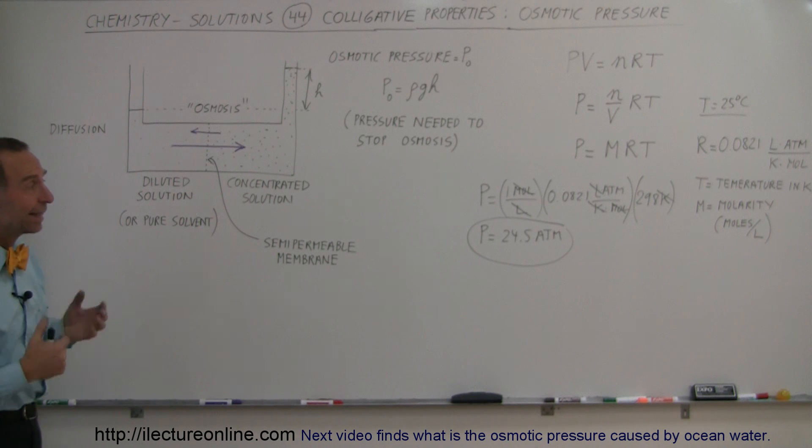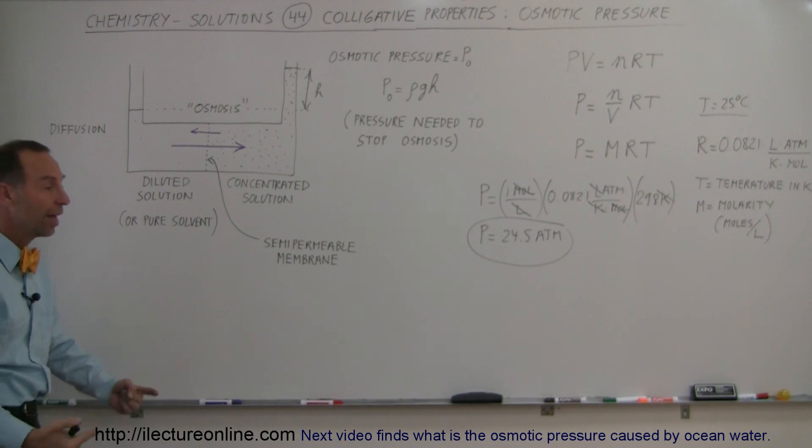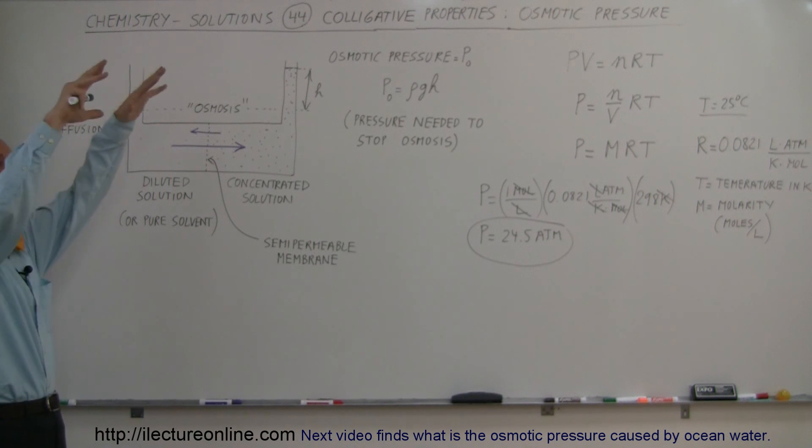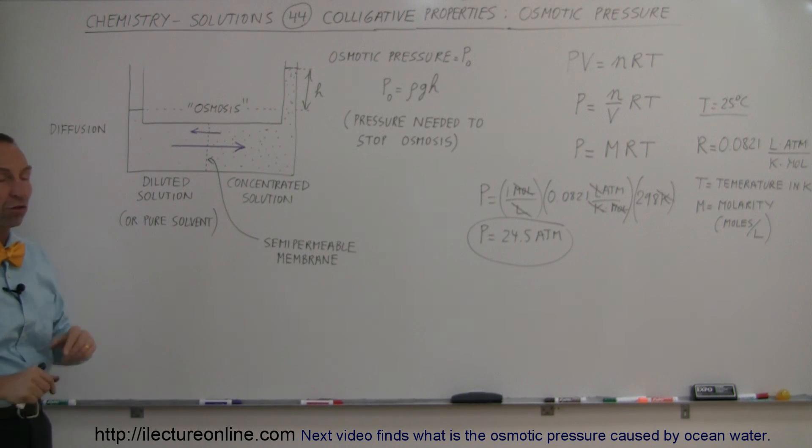That's absolutely enormous. And that is what enables the water to come into the roots of trees and push all the way to the top where the leaves can have the water, and that's usually done through osmotic pressure. We'll learn a little bit more about that in later videos.